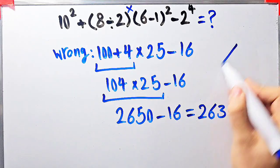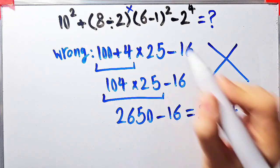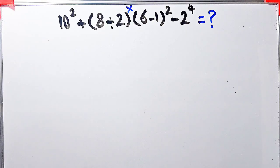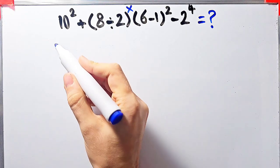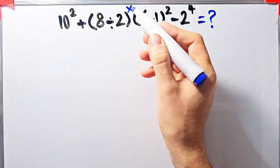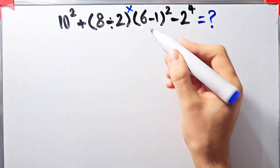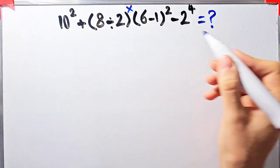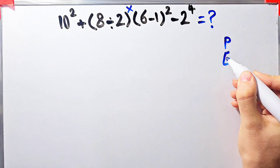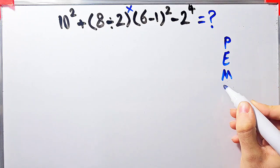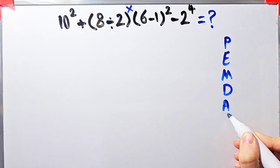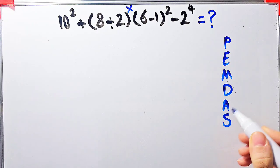But this answer is definitely wrong. Let's solve this question step by step together. In this question we have exponent, addition, parenthesis, division, multiplication, and subtraction. To solve this question we need to follow the order of operations, which is PEMDAS.